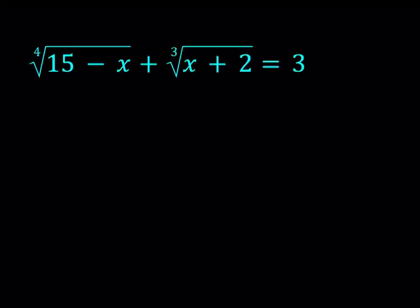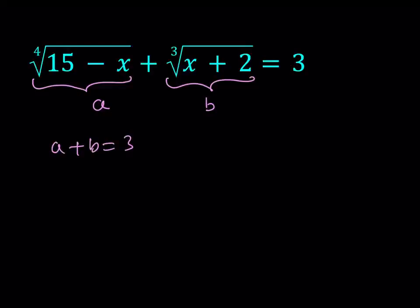So now I'm going to call this expression a and I'm going to call the second part b. So that from here I get a simple equation which is a plus b equals 3. That looks simple but it contains two variables, so we have to find another equation that will help us solve it as a system. Otherwise we're going to get infinitely many solutions but we know that there aren't infinitely many.